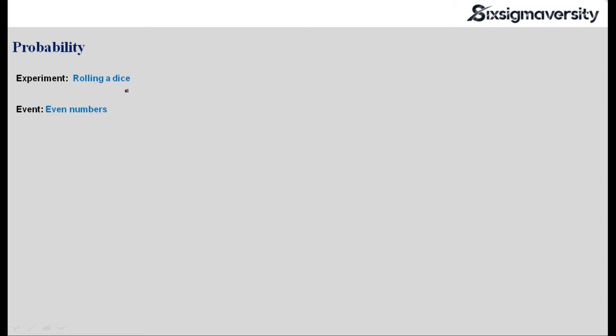Let's understand some basic terminologies here. An experiment that I am doing is called rolling a dice. Rolling a dice is known as the experiment, and the event that I'm really interested in — let's say I'm interested in looking at the probability of even numbers when I roll the dice — which is 2, 4, and 6. These are the even numbers and that is basically an event that I'm interested in. Now what are the elementary events? Those are the sample space values — 2, 4, and 6 — those are my elementary events.